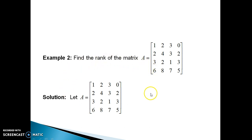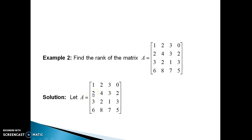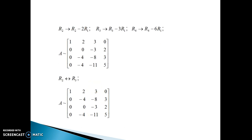Step number 1 says write down the given matrix. Now, as we are smart, instead of writing one row transformation at a time, I would like to make 3 operations simultaneously. The target positions are the three elements in the first column below the pivot. The transformations are: R2 changes to R2 minus 2R1, R3 changes to R3 minus 3R1, and R4 changes to R4 minus 6R1. After applying these row transformations, you will get the resulting matrix.